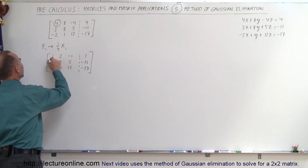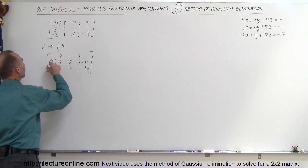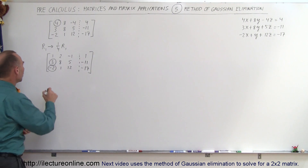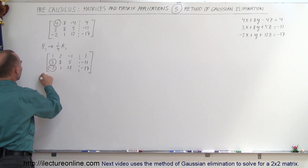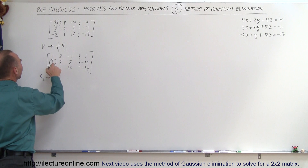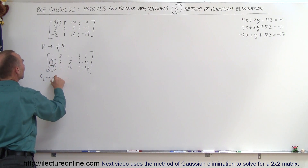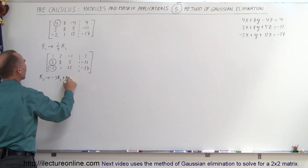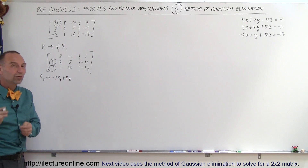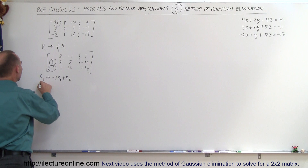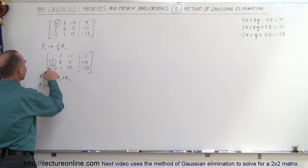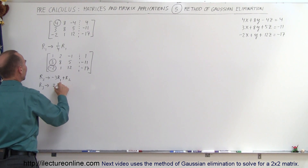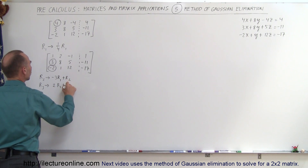Next, we want to get rid of the 3 and the negative 2. Since we have a 1 in the pivot position, we take R2 and replace it by negative 3 times R1 added to R2. We do the same for R3: replace it by positive 2 times R1 added to R3.